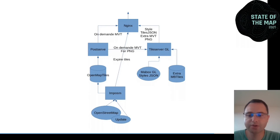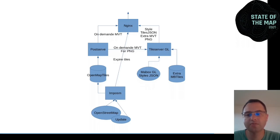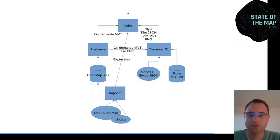Here is an architecture overview. At the bottom, OpenStreetMap data and updates are loaded by imposm into the OpenMapTiles database. The OpenMapTiles database is queried by PostServe on request to serve MapBox Vector Tiles to the web through NGINX. Tiles can also be served to TileServerGL to rasterize vector tiles. TileServerGL also serves styles, MapBox GL style JSON, and other tiles from MBTiles such as contour lines and hillshading.